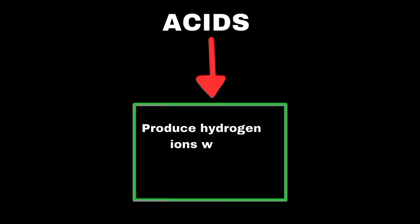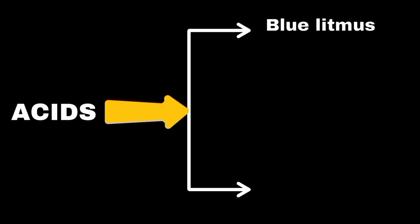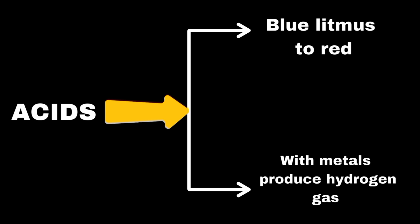Let's explain acids first. Acids are substances that produce hydrogen ions when dissolved in water. They are known for their sour taste. Acids have the ability to turn blue litmus paper red, and acids often react with metals to produce hydrogen gas.